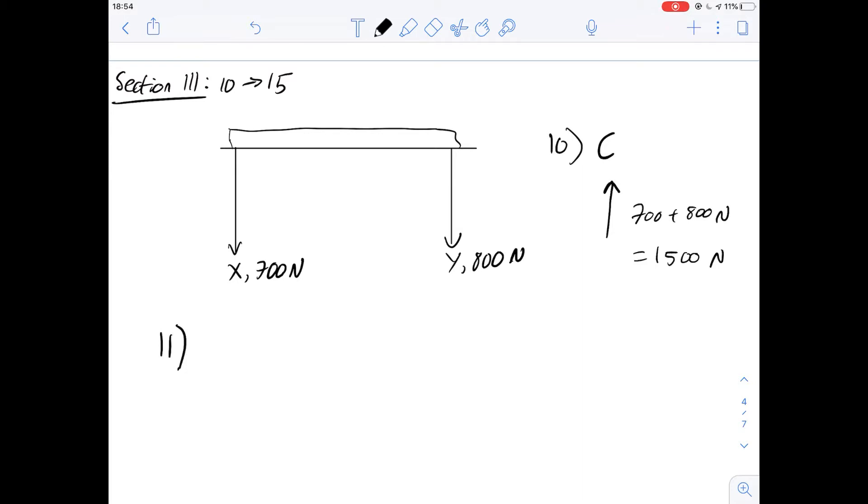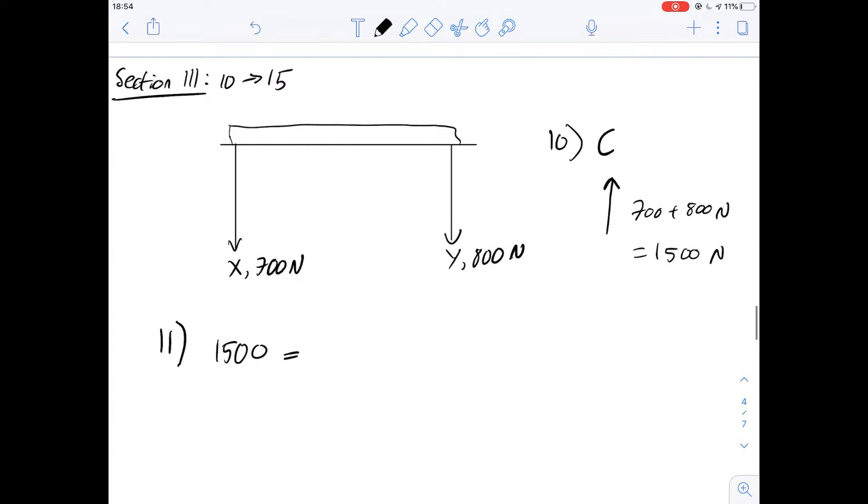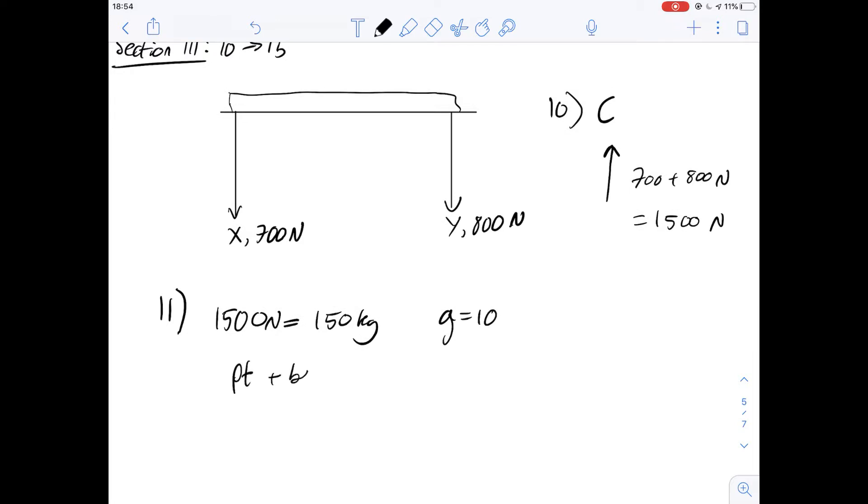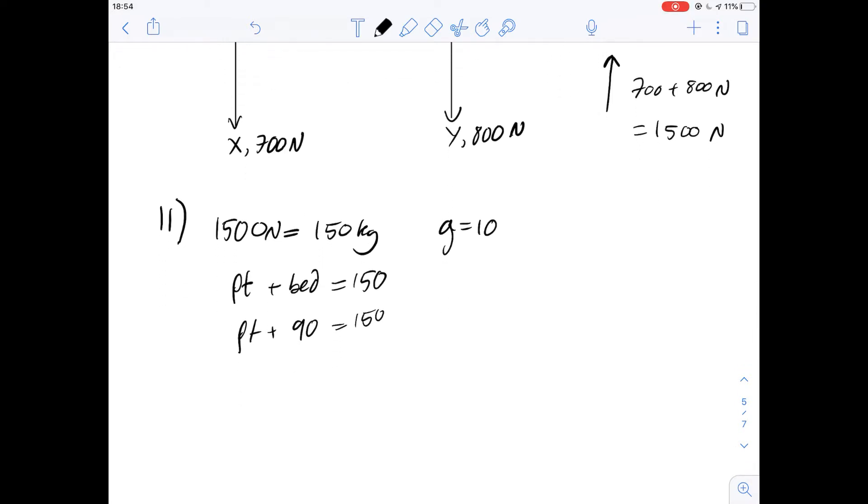If we look at 11, it says the mass of the patient is what? We're told the mass of the bed and bedding is 90 kilograms. So the total combined mass or weight is 1500 newtons, which is equal to 150 kilograms because the acceleration due to gravity is 10. We know the combined weight is 150 kilograms, the bed is 90 kilograms, so the patient is 150 minus 90 kilograms. The patient weighs 60 kilograms, giving us an answer of B.